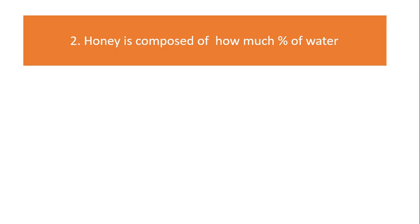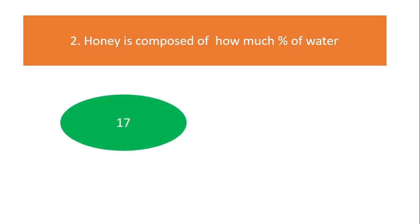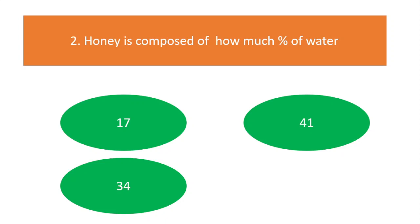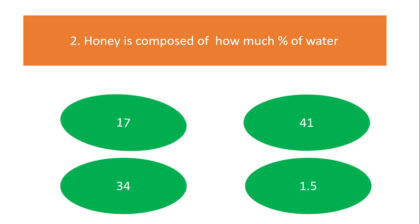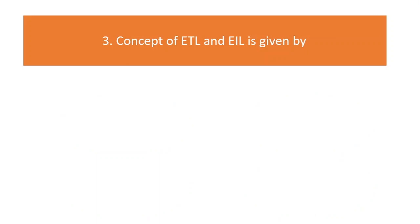Honey is composed of how much percent of water? Options are 17%, 41%, 34%, or 1.5%. The answer is 17%.